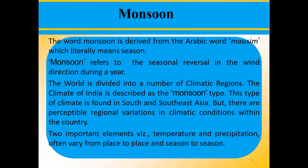The word monsoon — right now we are in the monsoon season. This word monsoon is derived from the Arabic word 'mosim', which literally means seasons. Monsoon refers to the seasonal reversal in the wind direction during the year. The climate of India is described as monsoon type, that is seasonal reversal in the wind. This type of climate is found in South and Southeast Asia.